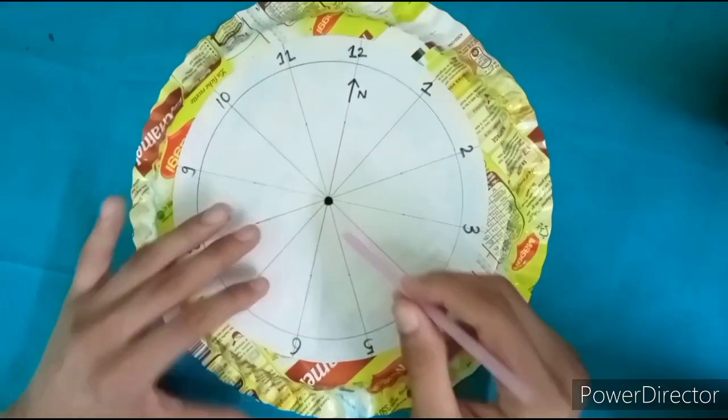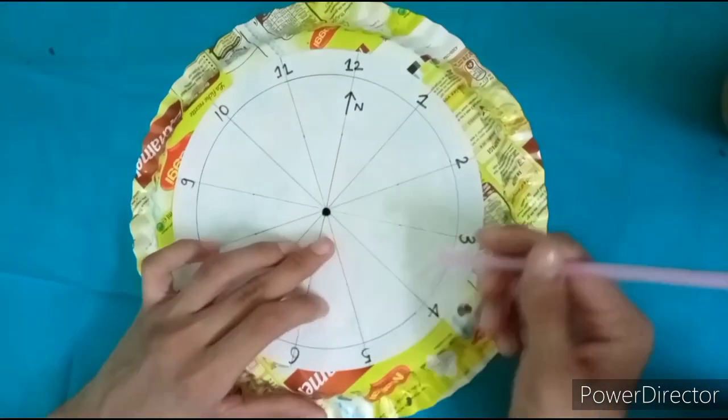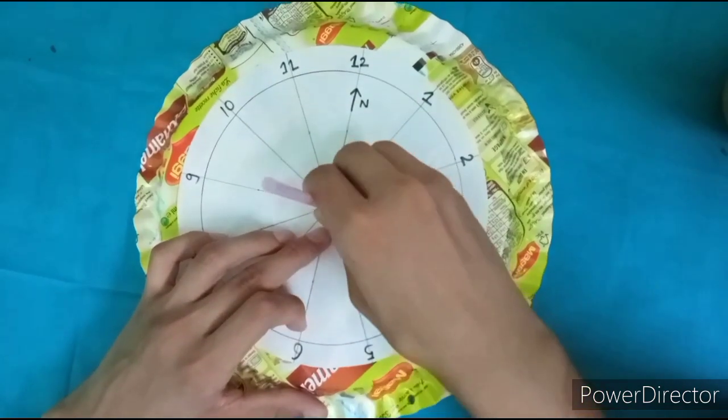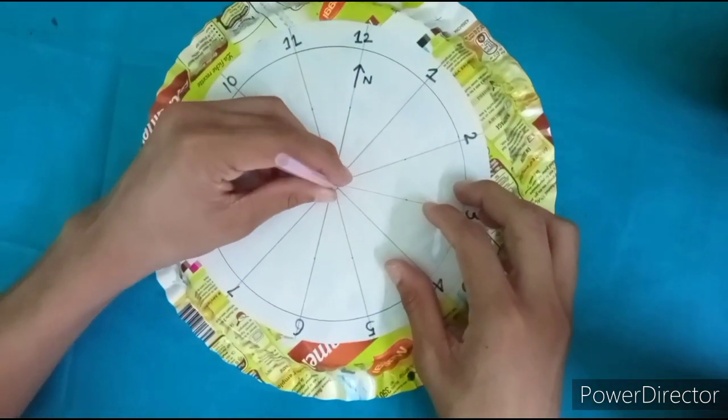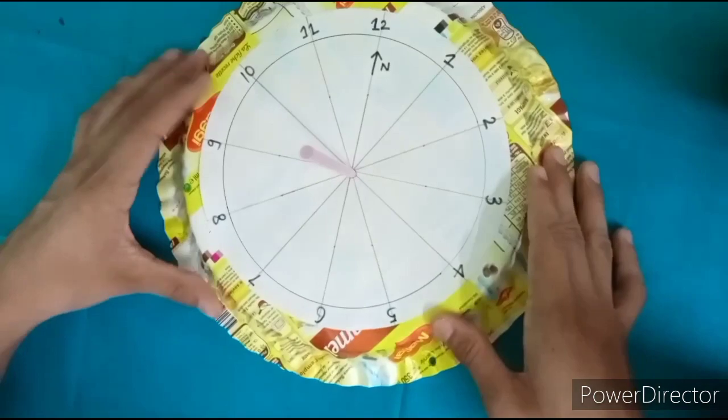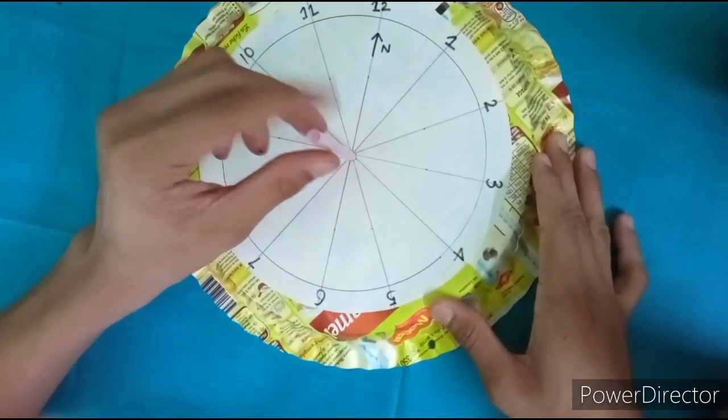I have enlarged the hole of the plate with the help of a pen. Now I am going to fix this straw in it. Now it looks like this. It is fixed perpendicularly to the plate.